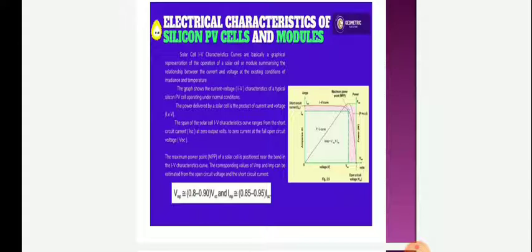The graph shows the current-voltage IV characteristics of a typical PV cell operating under normal conditions. The power delivered by the solar cell is the product of current and voltage. The span of the solar cell IV characteristic curves ranges from the short circuit current ISC at zero output volts to zero current at the full open circuit voltage VOC. The maximum power point is the position near the bend in the IV characteristic curve.